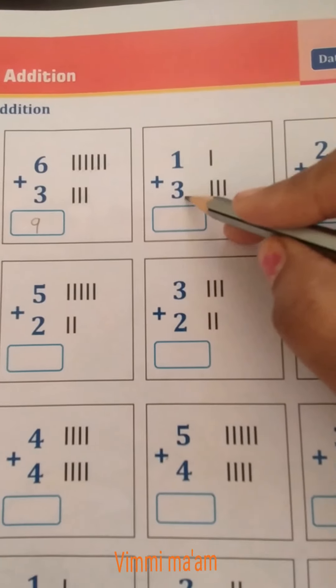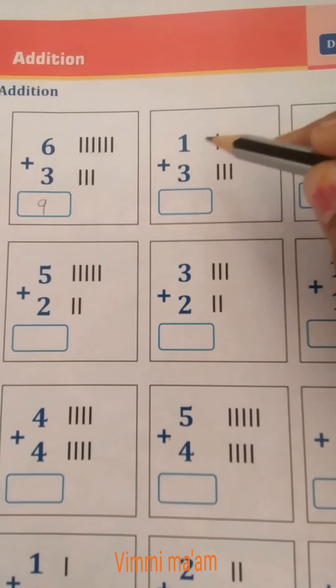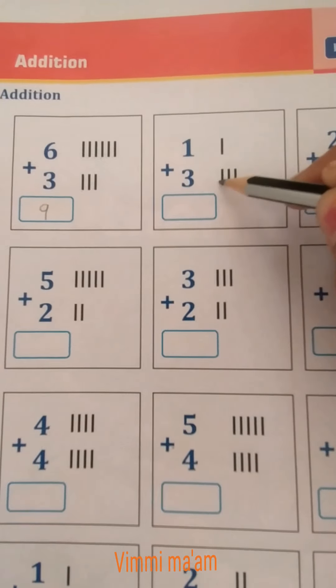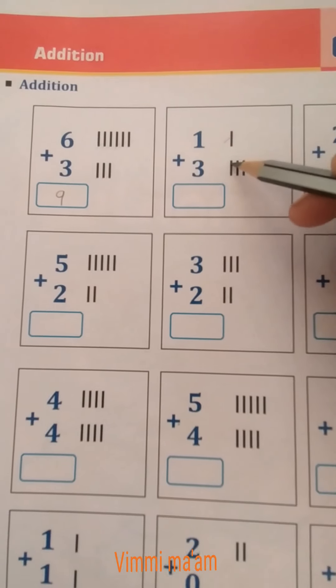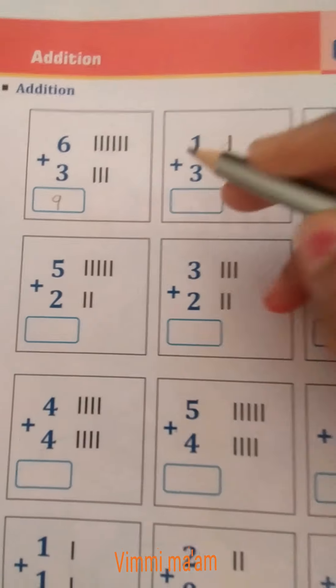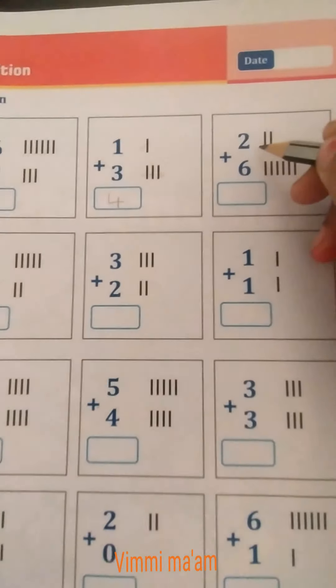1 plus 3. For 1, we draw 1 line. For 3, we draw 3 lines: 1, 2, 3. Now counting: 1, 2, 3, 4. How many lines? 4. So we write number 4.